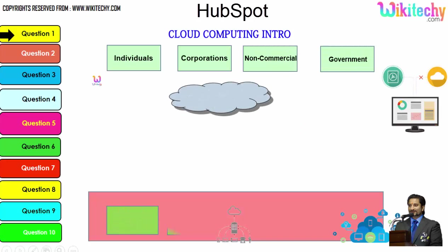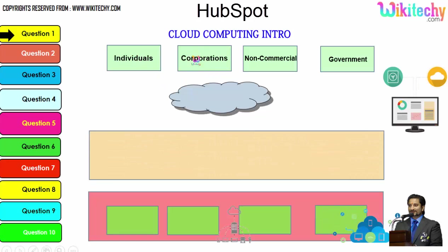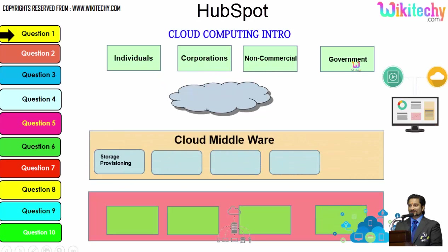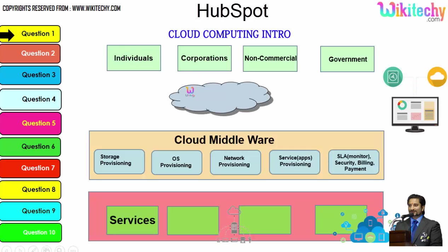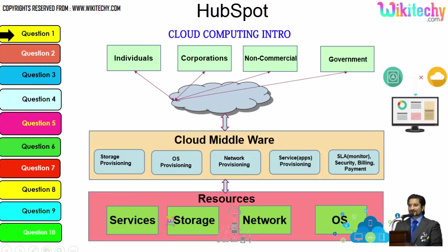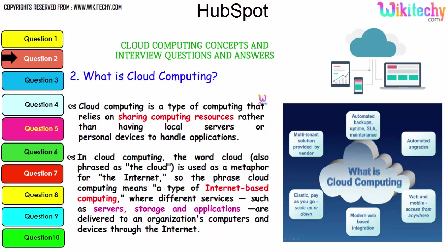Still further, you can see there are different types of users: individuals, corporations, non-commercial people, and government. From any of these users, they are able to access services, storage, networks, or operating systems via the cloud middleware. These are specialized software layers provided by the cloud service provider to give end users access to cloud resources. This is how the cloud computing architecture looks.